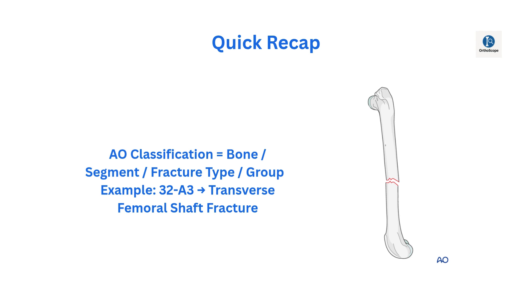So to recap, AO classification equals bone, segment, fracture type, and group. For example, 32A3 is a transverse fracture of the femoral shaft.